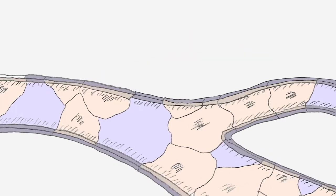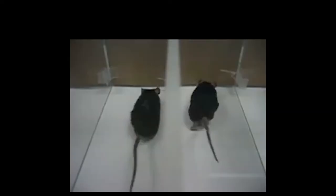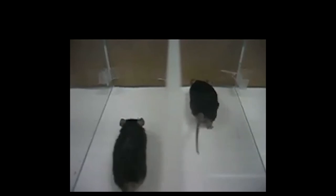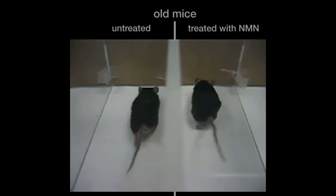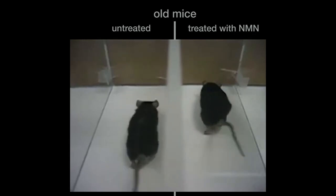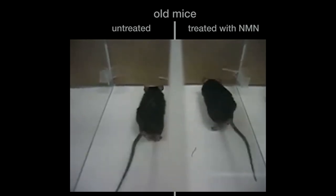These mice had better endothelial function, blood vessel growth, and improved blood supply to their muscles. And what was most striking, these animals' capacity for exercise improved dramatically. In fact, the old mice treated with NMN had up to 80% greater exercise capacity compared with the untreated old mice.